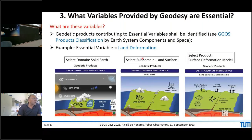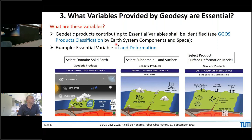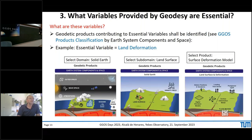What variables provided by geodesy are essential? We have geodetic products introduced already several times on the GGOS website. I made one example: an essential variable called 'land deformation.' Starting with earth system components, we go to the subdomain land surface, then to a surface deformation model — that is the product linked to this essential variable. It is not the only product; there could be more.